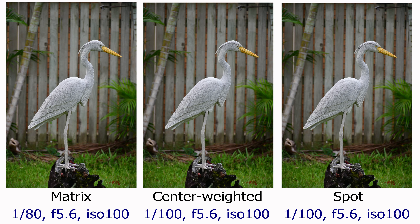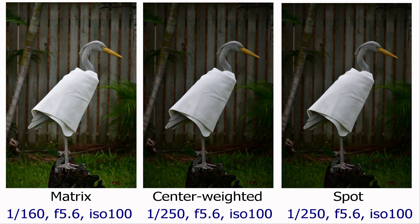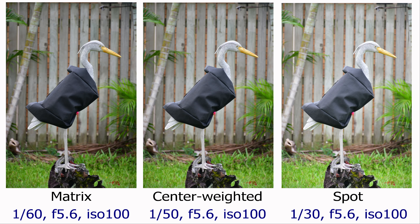Trevor has been very obliging to help me do this. We took a picture of Trevor in matrix, center weighted and spot. Then I put a white coat on Trevor and took a picture in matrix, center weighted and spot. And then I put a black coat on Trevor and took a picture in matrix, center weighted and spot.